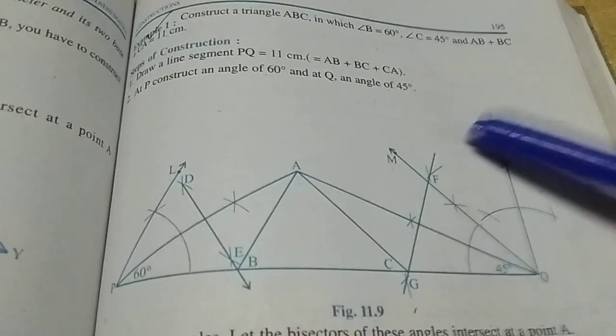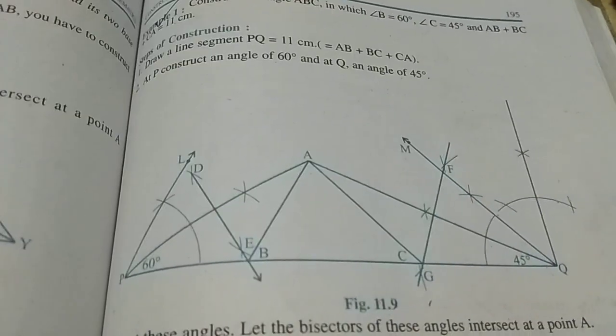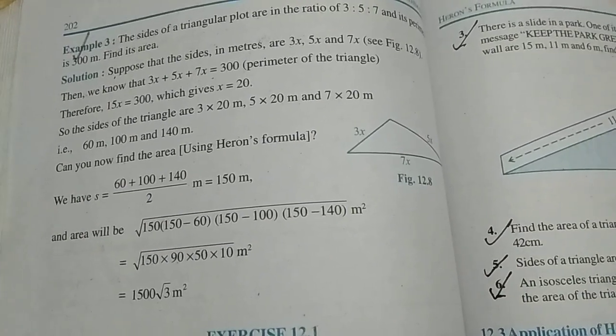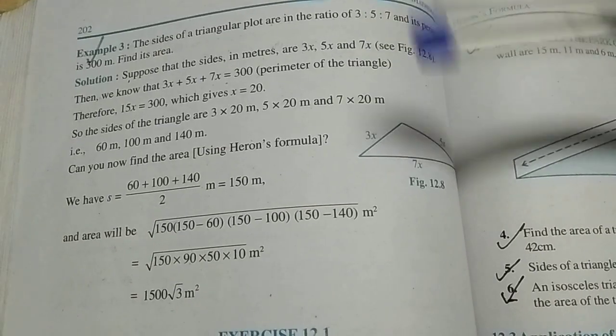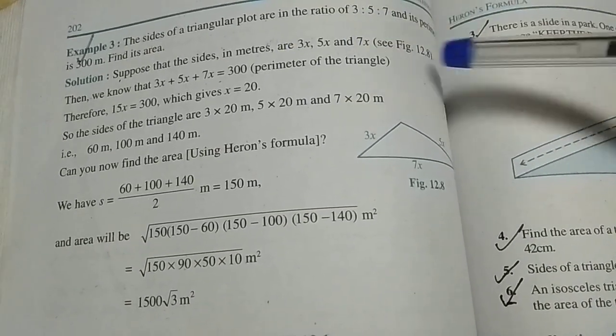We have chapter Heron's Formula. Example 3 is really important for the exam point of view: Sides of a triangular plot are in the ratio 3:5:7 and its perimeter is 300 meters. Find the area. Easy question but important example as well.